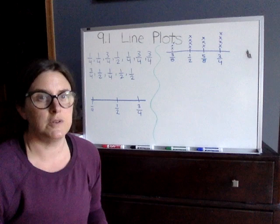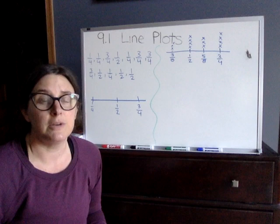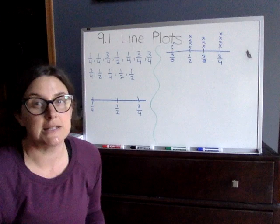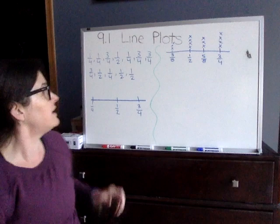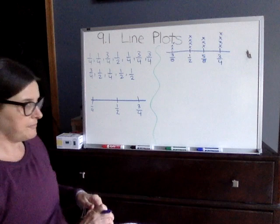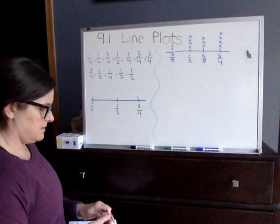Looking at your PDF, we're going to start with the first part. It says: use the data to complete the line plot, then answer the questions. A clerk in a health food store makes bags of trail mix. The amount of trail mix in each bag is listed below. It gives you 12 fractions, and you put them onto the line plot. The best way to do this is simply going through each number.